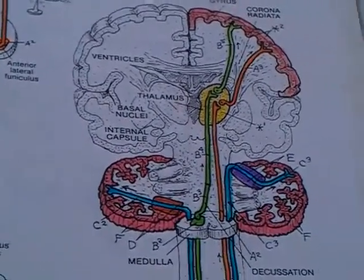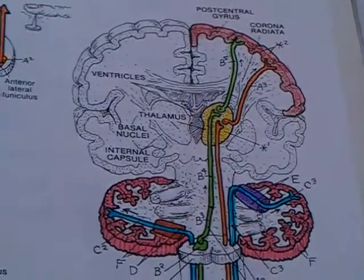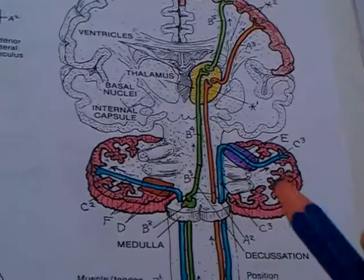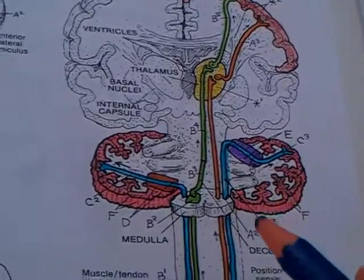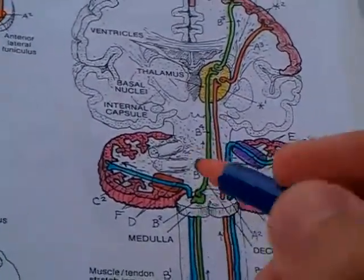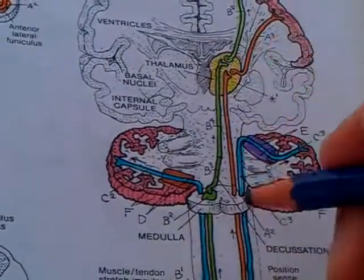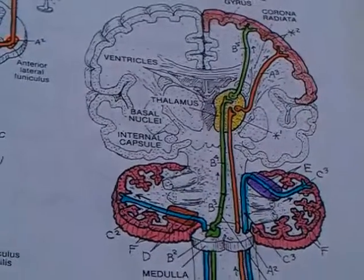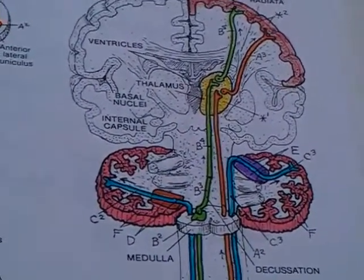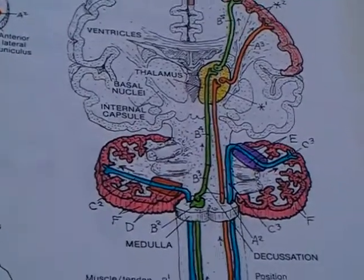Lastly, we have the trigeminothalamic tract, where nerve fibers from the trigeminal nerve enter the medial lemniscus in the brainstem and continue upwards with that tract. This is the main sensory pathway of cranial nerves carrying general sensations from the head and neck.